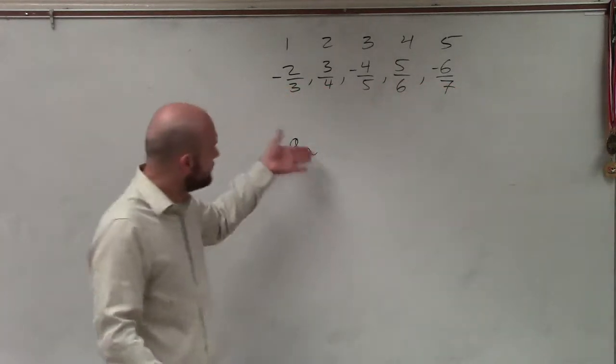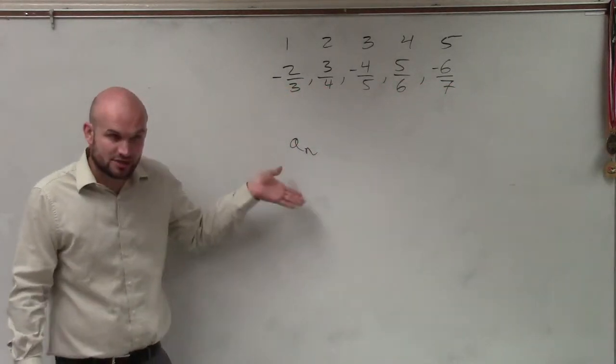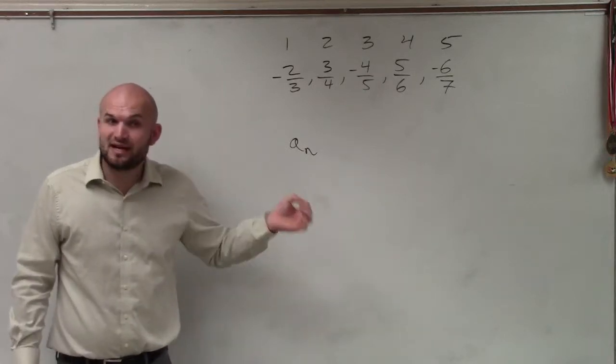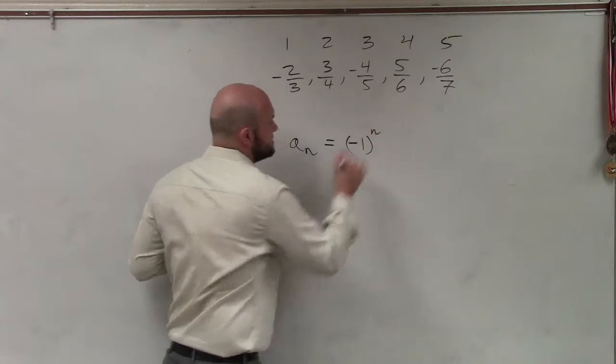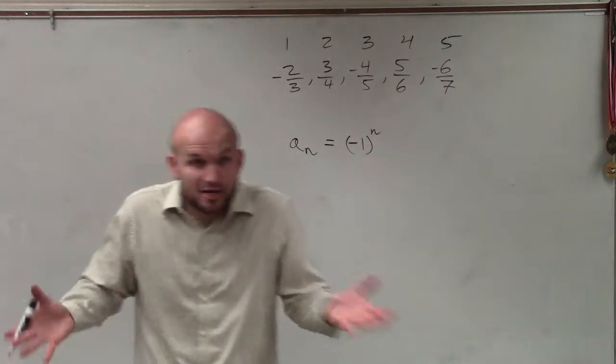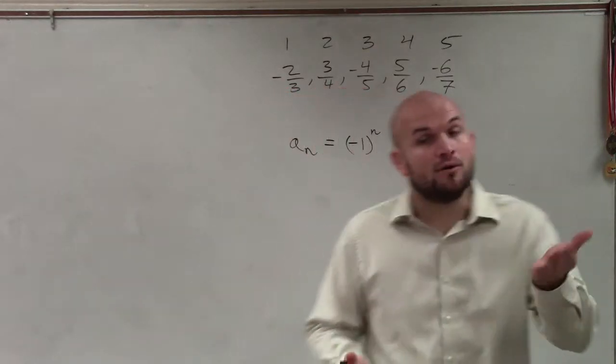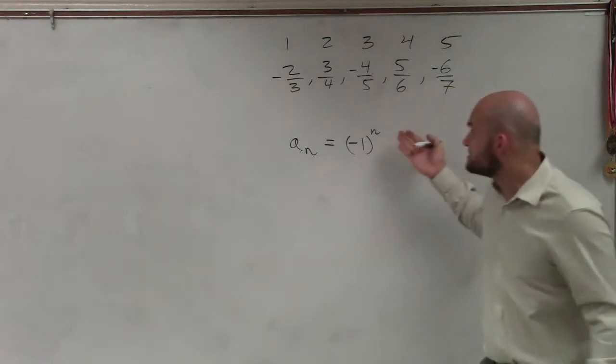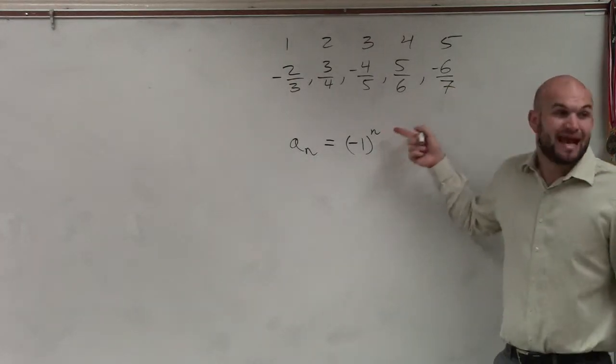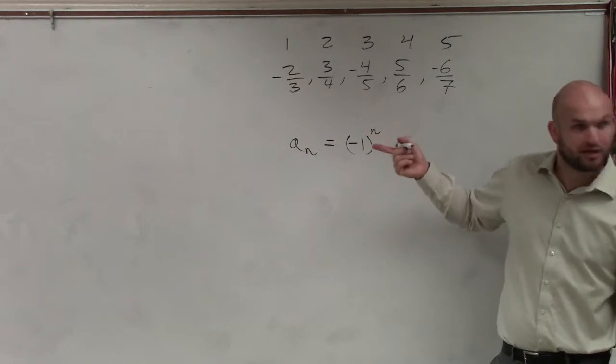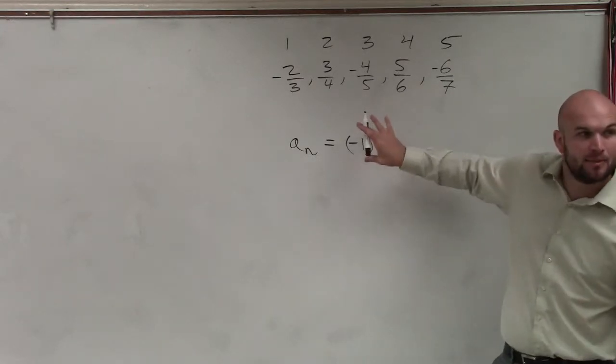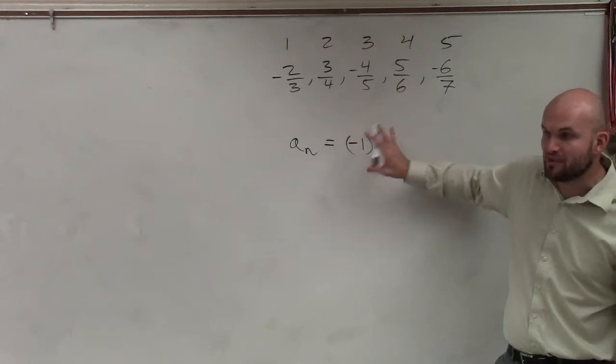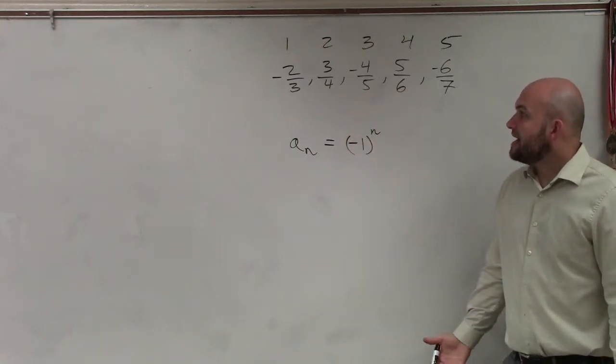Now, we want to write a rule in subscript notation. Once I see alternating signs, I'm automatically going to write negative one raised to the N power, because I know I have to have that involved. We looked at some problems last class where this could be N plus one or N minus one. It could change, but we know that's at least the basis of it.